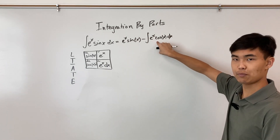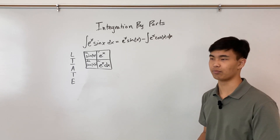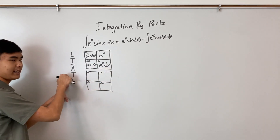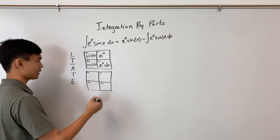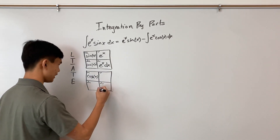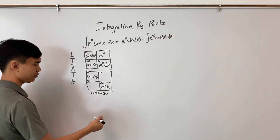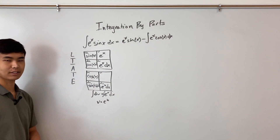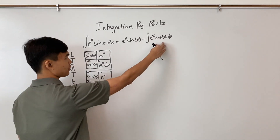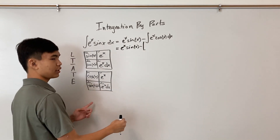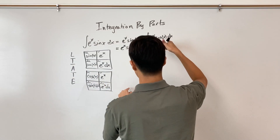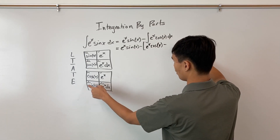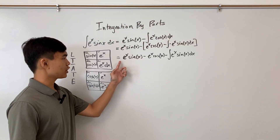We still have eˣ times cos(x), so we do integration by parts again. eˣ is exponential and cos(x) is trig, so u equals cos(x) and dv equals eˣ dx. Then du equals negative sin(x) dx and v equals eˣ. Applying the formula for this integral gives eˣ cos(x) minus the integral of negative eˣ sin(x) dx, which simplifies accordingly.